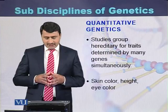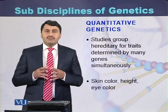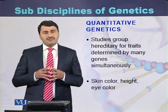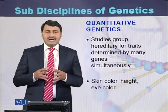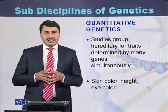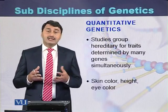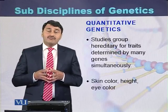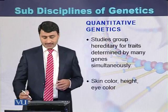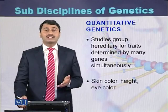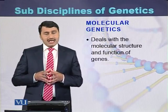Quantitative genetics deals with characters that are determined by more than one gene simultaneously. For example, skin color, height of humans, and eye color of humans are all controlled by many genes simultaneously, so this type of genetics is called quantitative genetics.